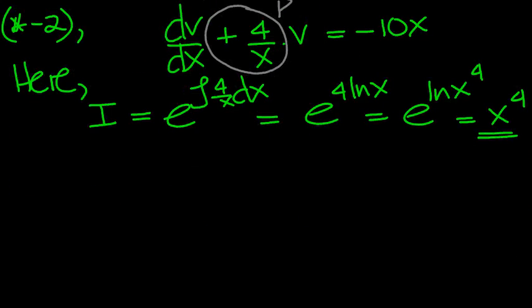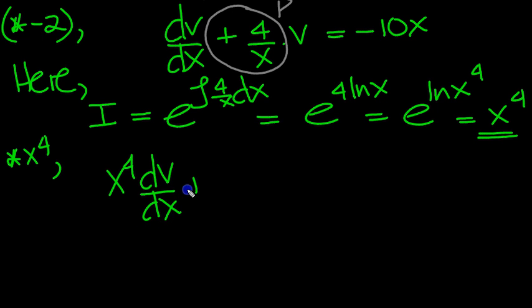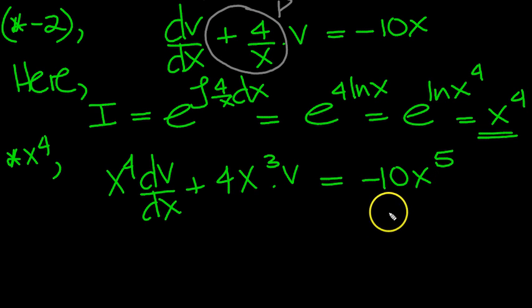So multiply the original equation then, which is here, by x to the 4. So multiply by x to the 4. So we get x to the 4, dv/dx, plus 4. Now one of the x's will cancel, so it'll be just x cubed times v, equals minus 10x to the 5, when you times x by x to the 4.